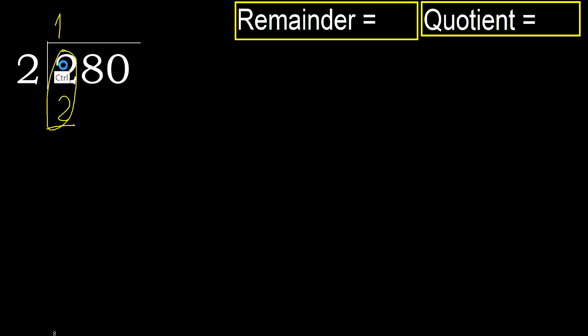Subtract. 2 minus 2 is 0. Next, eliminate the 0 on this side. Bring down 8.